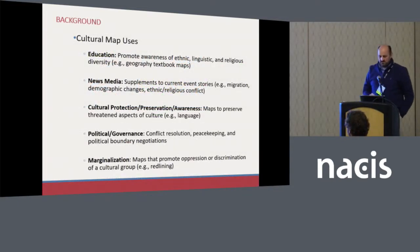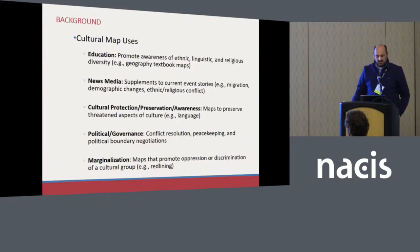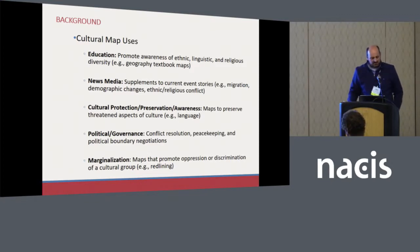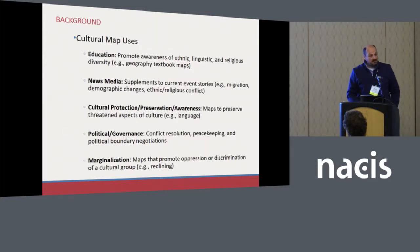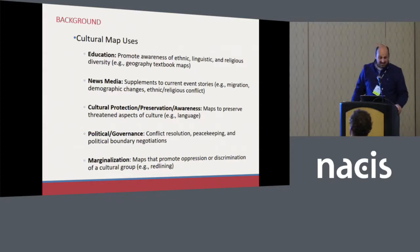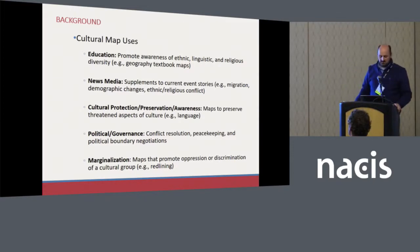There are a lot of diverse uses for these types of maps. You'll find them commonly used in education — think of geography textbooks, human geography, world regional geography — maps that depict the ethnic, linguistic, and religious diversity of a particular place or the world as a whole. We'll see these in news media as well, often used as supplements to current event stories covering issues related to migration, refugee crises, demographic changes, or ethnic and religious conflict.